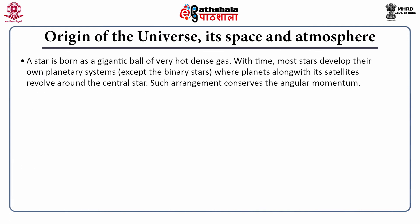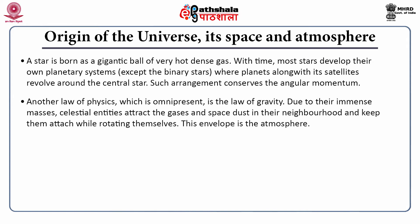A star is born as a gigantic ball of very hot dense gas. With time, most stars develop their own planetary system, except binary stars. In this planetary system, there is a central star and planets along with their satellites revolve around it. Such an arrangement conserves angular momentum, which is one of the basic laws of physics. Due to their immense mass, celestial entities attract the gases and space dust in their neighborhood and keep them attached while rotating — this envelope is the atmosphere.